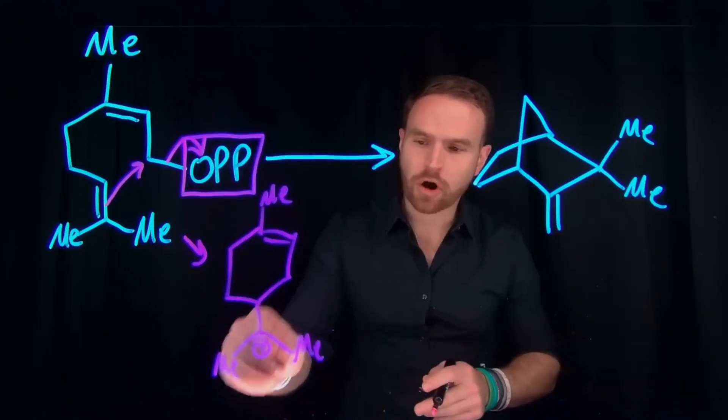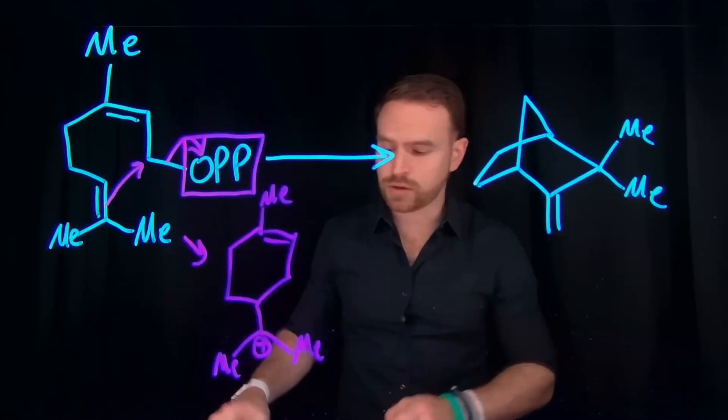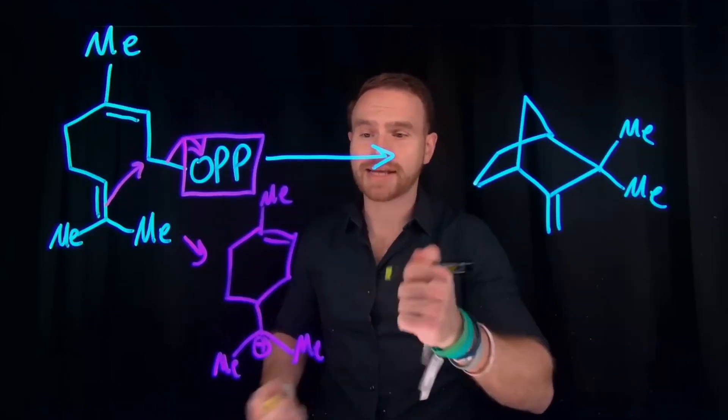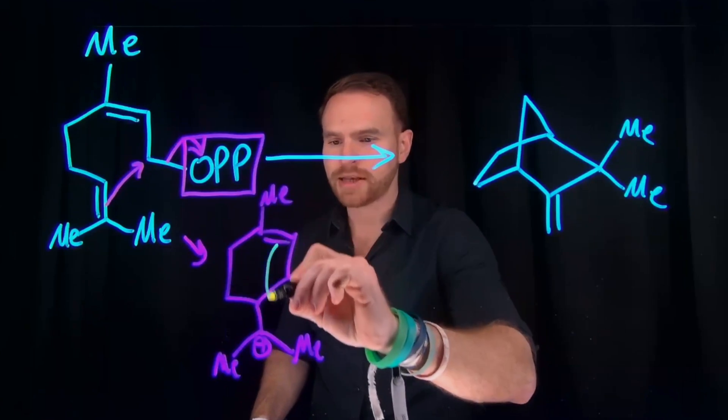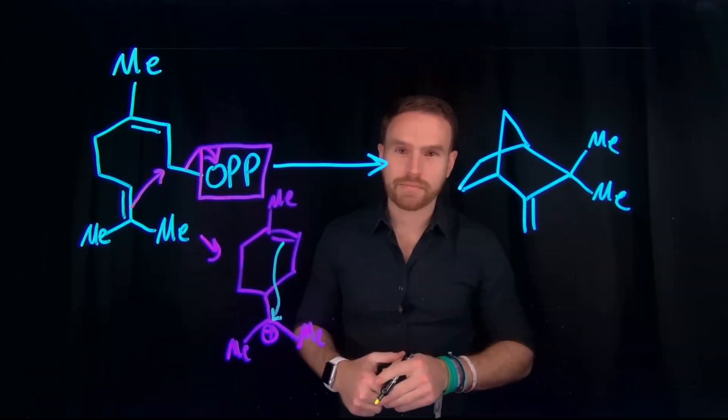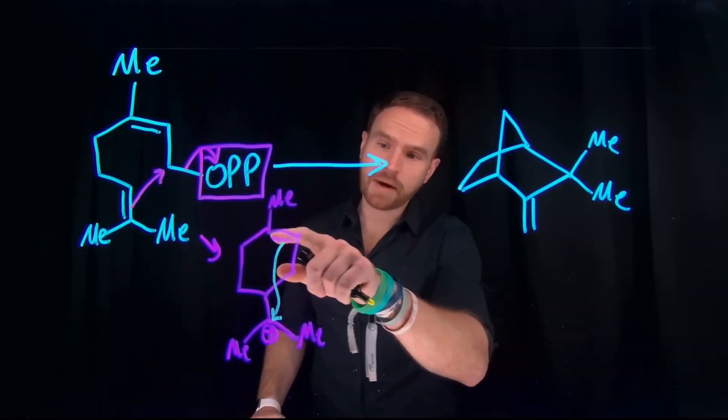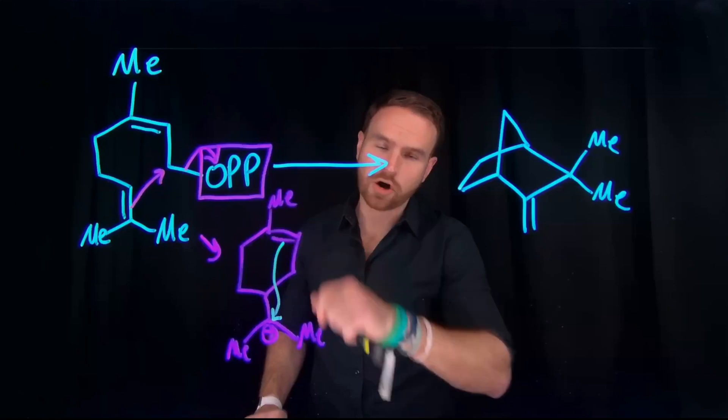And the presence of this carbocation is going to allow our alkene to act as a nucleophile. It will actually come and attack that position, which is how we end up with this cyclic fused ring system. But notice what it's also going to do is leave behind a new carbocation at this carbon position.